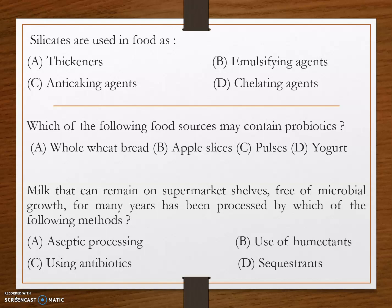Chelating or sequestering agents protect food products from many enzymatic reactions that promote deterioration during processing and storage.